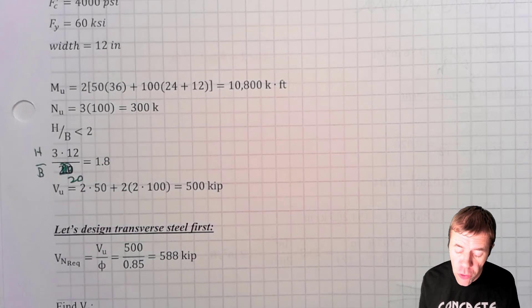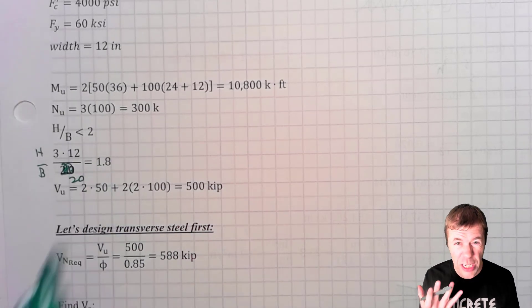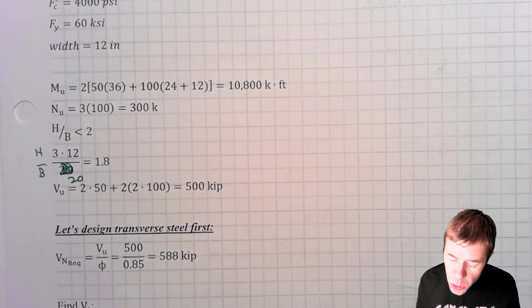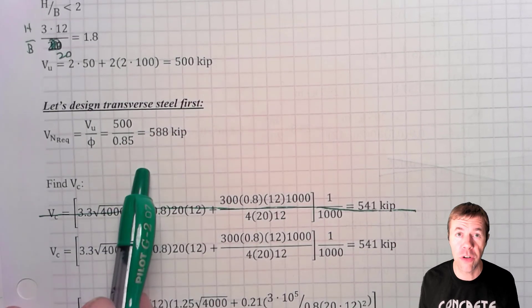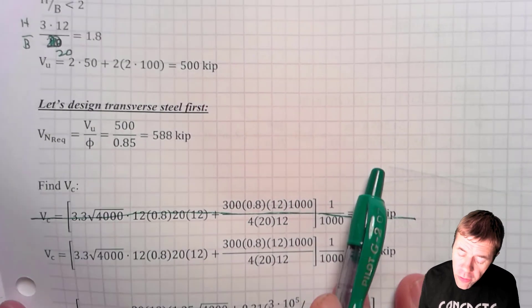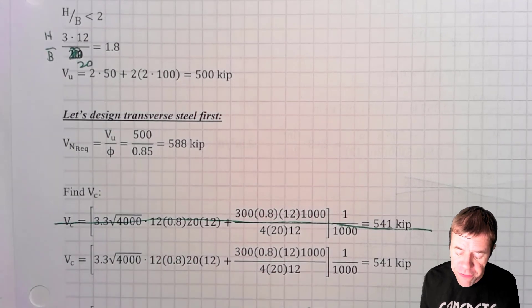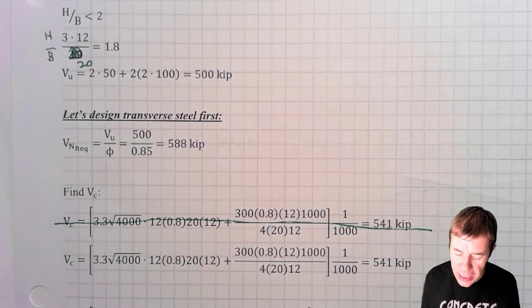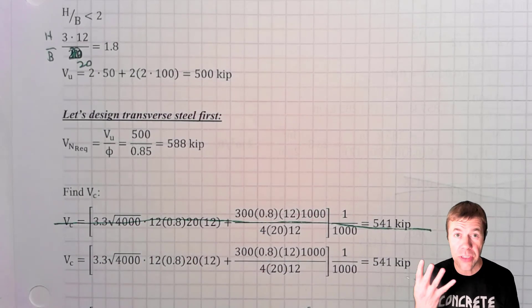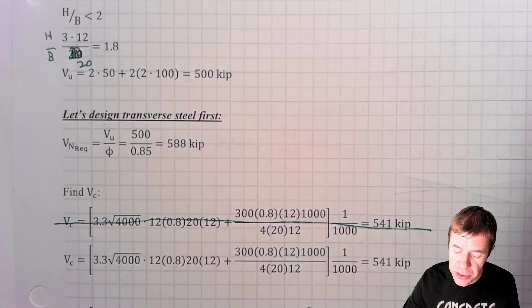But let's jump into the shear first because this is such a short squatty wall. So we're going to design our transverse shear first. We're going to take our Vu, our 500 kips, divide it by 0.85. That is our phi factor when it comes to shear. And we get 588 kips.